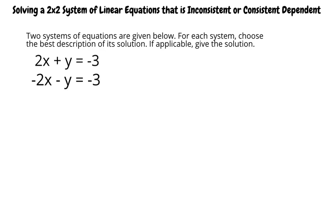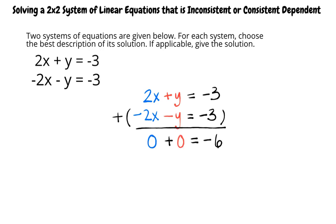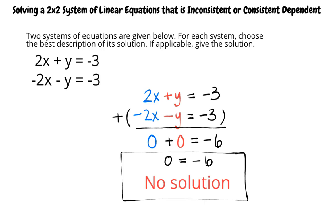The elimination method will be a quick way to solve this system. The x and y terms both have the same coefficient with differing signs, so when we add the two equations, the x and y terms will equal 0. We get: 2x plus negative 2x equals 0, y plus negative y equals 0, and negative 3 plus negative 3 equals negative 6. So we get 0 equals negative 6. Since 0 is not equal to negative 6, the system has no solution. If you were to graph the two lines, you would see that they are parallel.